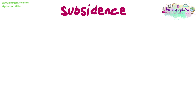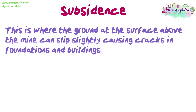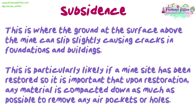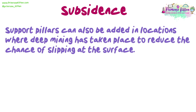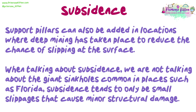The final impact we're going to look at is subsidence. This is where the ground at the surface above the mine can slip slightly, causing cracks in foundations and buildings. This is particularly likely if a mine site has been restored, so it is important that upon restoration any material is compacted down as much as possible to remove any air pockets or holes. Support pillars can also be added in locations where deep mining has taken place to reduce the chance of slipping at the surface. Subsidence tends to be small slippages causing minor structural damage, not the giant sinkholes common in places such as Florida. We have now looked at a range of environmental impacts caused by mining, as well as the methods used to reduce them. We need to continue extracting minerals from the ground, but we need to make sure we are doing it sustainably — by applying these conservation measures it should reduce the impact on the environment.